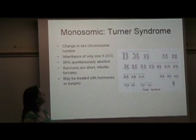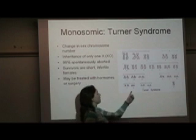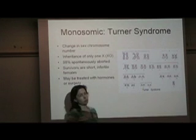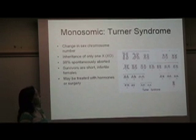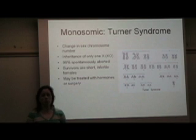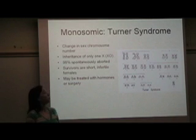This is our one example of a monosomic individual — this is called Turner syndrome. This is a female that only has one X chromosome. You can see from the karyotype that instead of being XX, this female has a single X chromosome. She's infertile. Those who survive — even though 98% are spontaneously aborted — are short and infertile. It can be treated with some hormone replacement therapy, giving them extra estrogen, but they cannot reproduce.